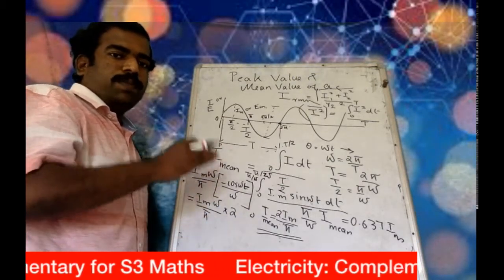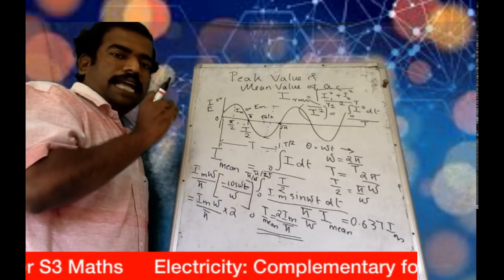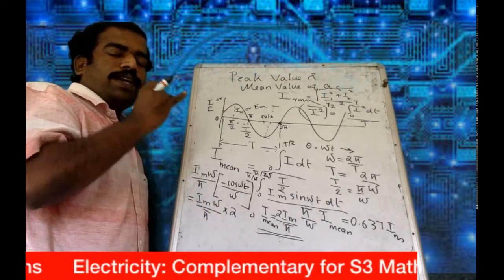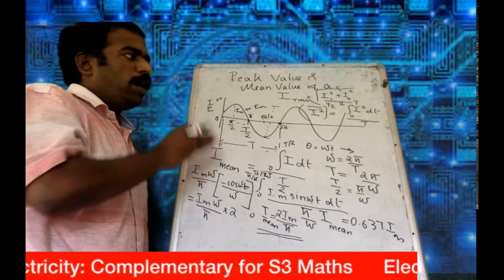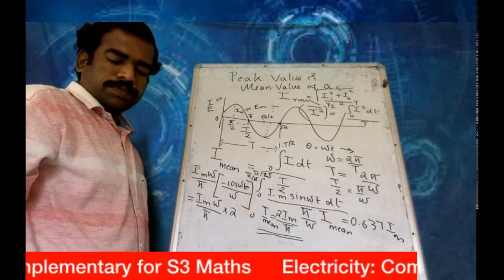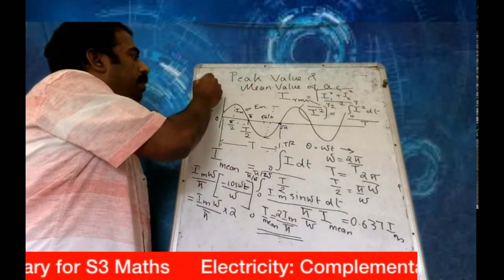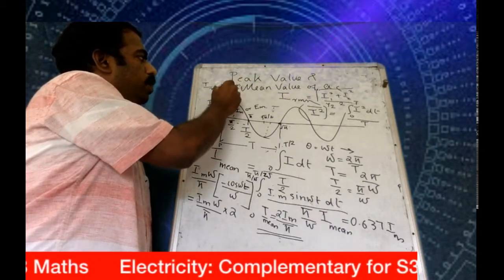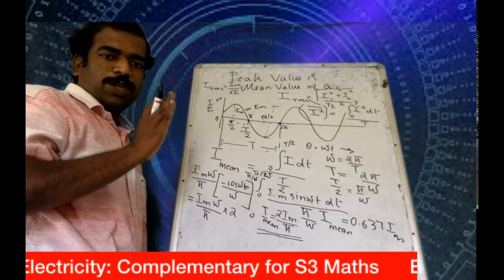I will cover the full derivation of the RMS value in my next session. Hope you understand how the EMF is induced in the coil, what the mean value is, what the peak value is, and what the RMS value is. The answer for the RMS value of alternating current is I_rms = I0 / √2, or Im / √2 — the maximum peak value divided by root 2.